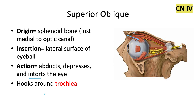It hooks around the trochlea, which is a little tendinous sling that forms a pulley-like structure — that's an important thing to know for the board exam, as they sometimes ask about it directly. And this muscle is our first exception of the video.